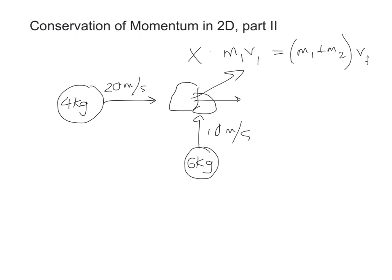They're going to have both an x component and a y component, and I have to treat those separately. So instead of just calling this v final, we'd better call it v final x because this is the x direction. Using my simple numbers, we've got 4 times 20 for m1 v1, so that's 80 equals m1 plus m2 which is 10. And so that means v final x is going to be 8 meters per second.